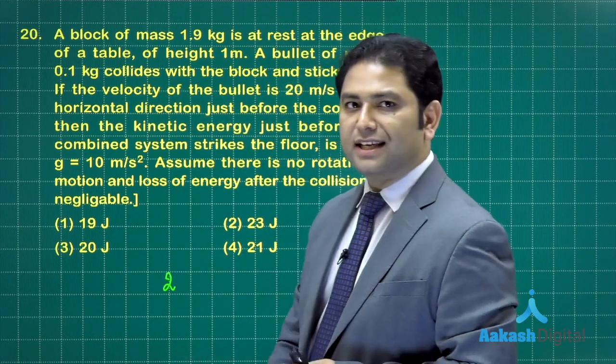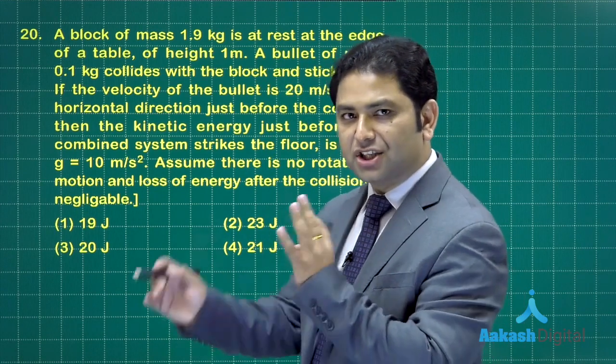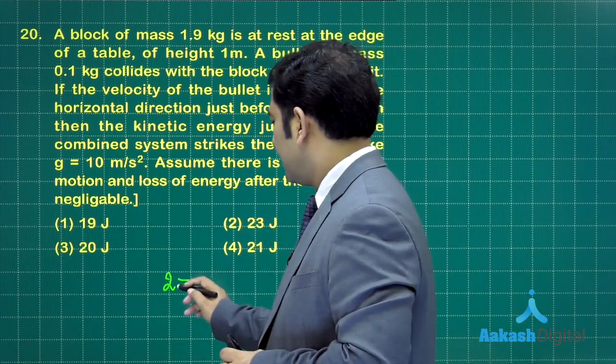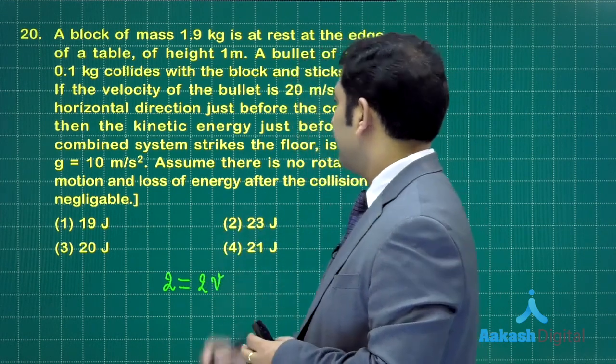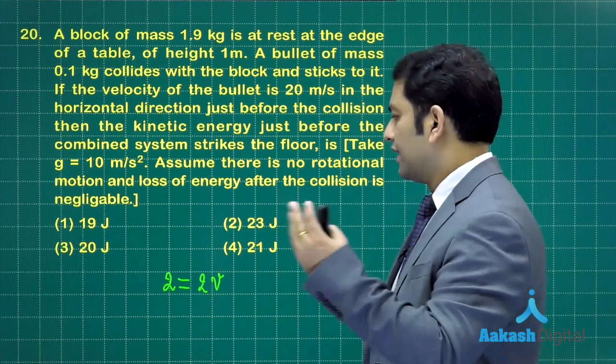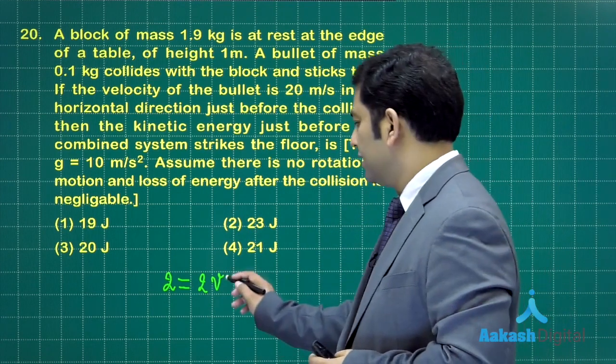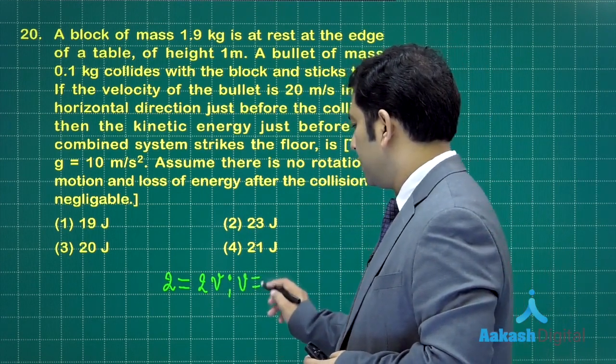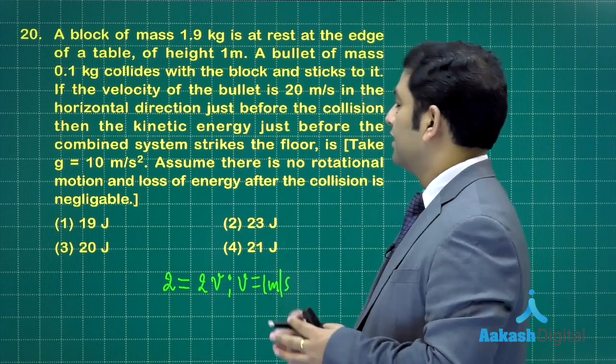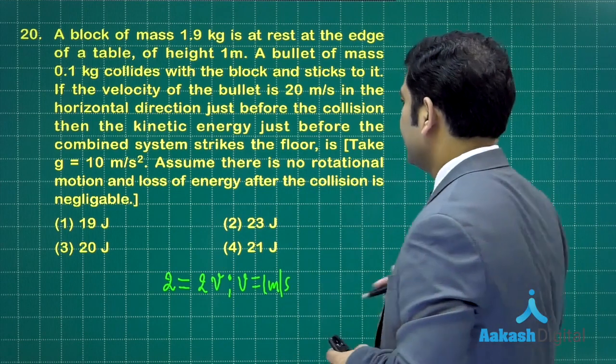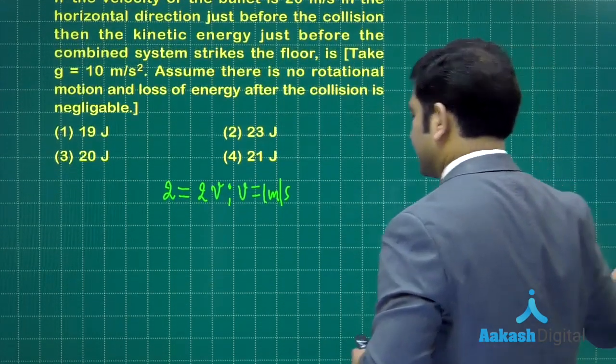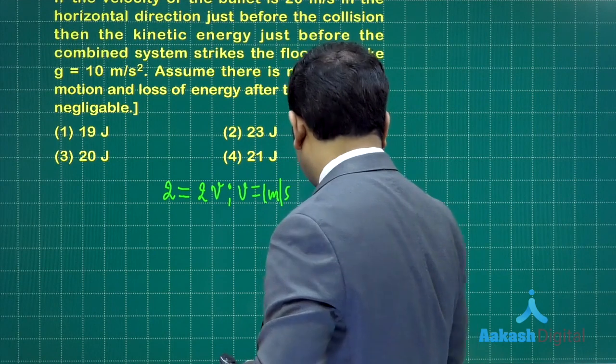Eventually the bullet and block will be one system, 2 kg, and let's say V is the velocity of that combined system. So this V will be 1 meter per second. The velocity just after the collision is done, but the story continues.